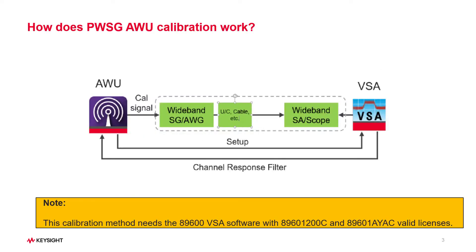The PWSGAW desktop application provides an easy way to automate the correction filter file generation using PathWave VSA software in real-time. The calibration is done by applying the reversion of the channel response from VSA to the waveform. The waveform applied with the correction filter file can then be downloaded to the signal generator or exported to a new waveform.